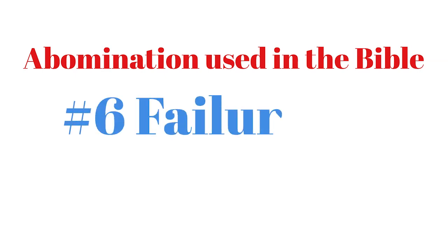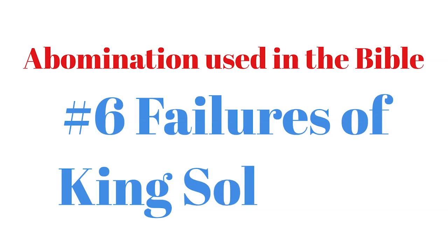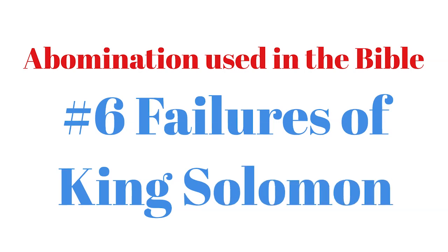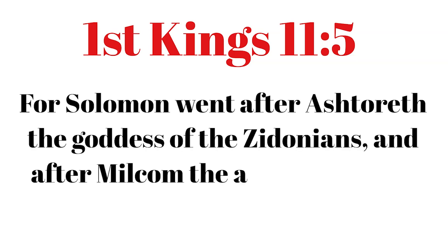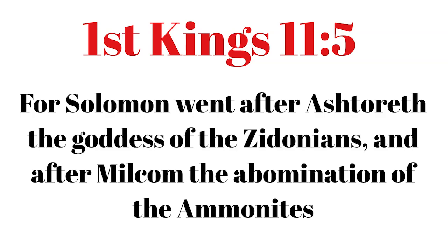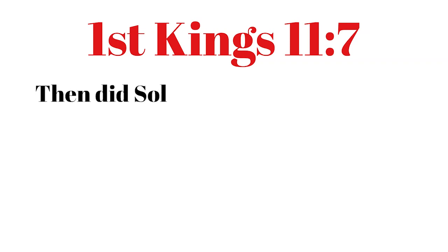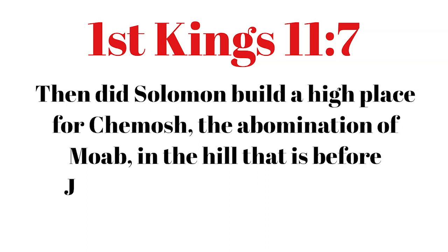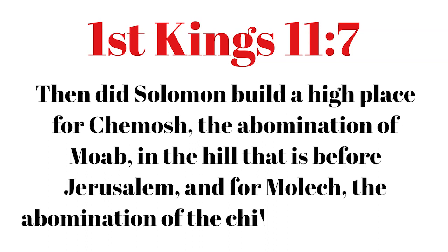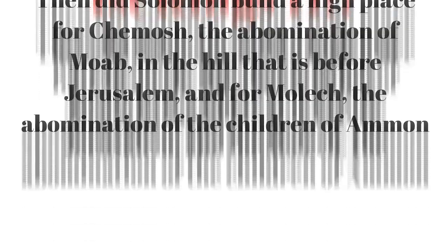Abomination used in the Bible, number 6: Failures of King Solomon. 1 Kings 11:5 — For Solomon went after Ashtoreth, the goddess of the Zidonians, and Milcom, the abomination of the Ammonites. 1 Kings 11:7 — Then Solomon built a high place for Chemosh, the abomination of Moab, in the hill country that is before Jerusalem, and for Molech, the abomination of the children of Ammon.